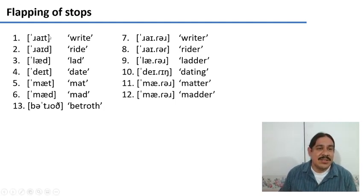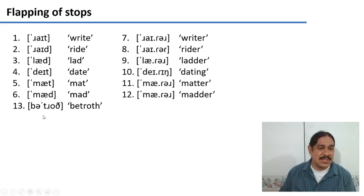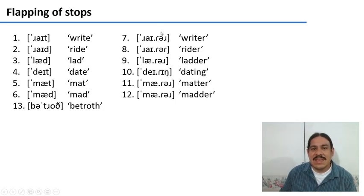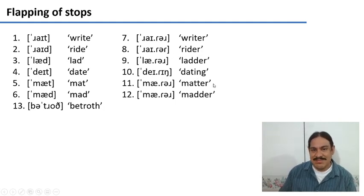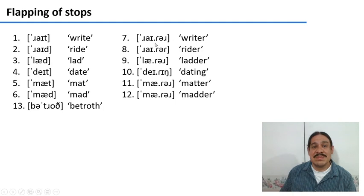Here is some data from English. In the left column we have alveolar stops, like T in 'right,' 'date,' 'mat,' and also D as in 'bride,' 'lad,' and 'mad,' and T in 'betroth.' On the other hand, here we have examples of the tap — for example in 'rider,' 'ladder,' 'dating,' 'matter.' Some sounds are stops, some are taps.